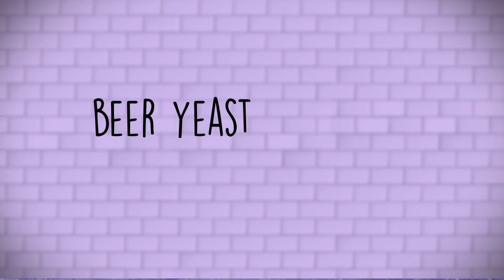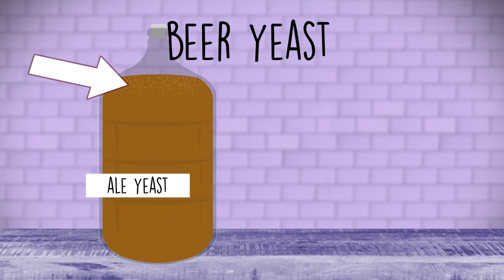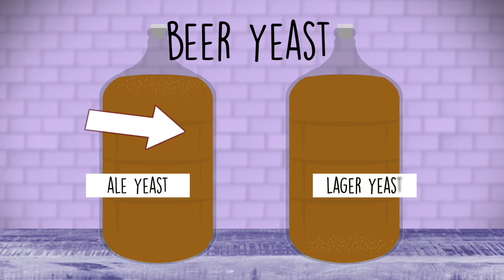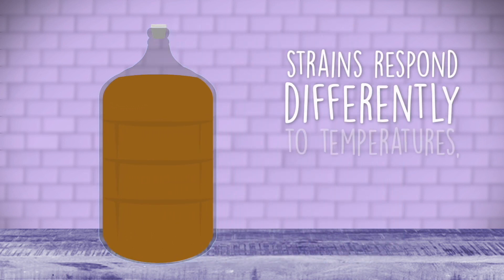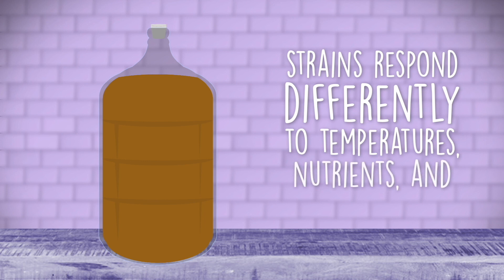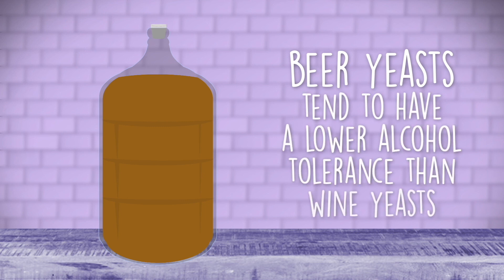Beer yeasts are generally put into two categories: ale yeast, which are top-fermenting, and lager yeast, which are bottom-fermenting. There are various strains within these categories, all responding differently to temperature and nutrition to create different flavor compounds for different styles. Beer yeasts tend to have a lower alcohol tolerance than wine yeasts, meaning they can become stressed or even tap out when fermenting higher-gravity musts.